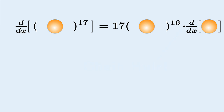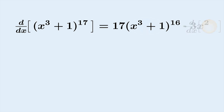If we later find out the blob is explicitly x³ + 1, the work is still valid: substitute x³ + 1 and note that its derivative is 3x². Similarly, the derivative of sin(something) is cos(something), and the chain rule says multiply by the derivative of that something with respect to x. If that something turns out to be x⁵, the derivative of x⁵ is 5x⁴.